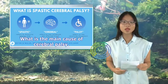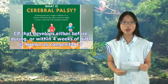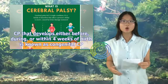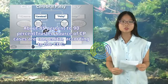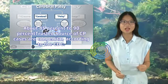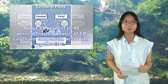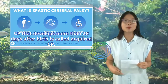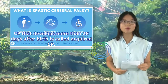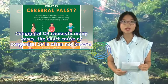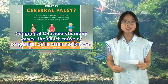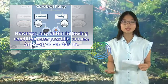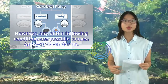CP that develops either before, during, or within 4 weeks of birth is known as congenital CP. About 85% to 90% of CP cases are congenital, according to the CDC. CP that develops more than 28 days after birth is called acquired CP. In many cases of congenital CP, the exact cause is often not known; however, any of the following conditions are possible causes.